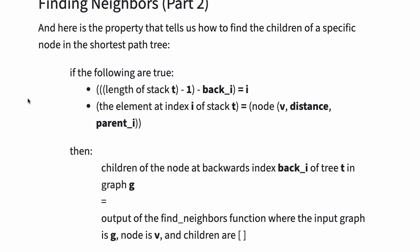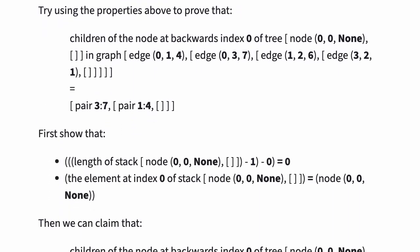Next, here is the property that tells us how to find the children of a specific node in the shortest path tree. If the length of stack t minus 1 minus back(i) is equal to i, and the element at index i of stack t is equal to node(v, distance, parent i), then children of the node at backwards index back(i) of tree t in graph g is equal to the output of the find neighbors function where the input graph is g, node is v, and children are empty. Try using this property to prove that the children of the node at backwards index 0 of tree node(0,0,none) in graph edge(0,1,4), (0,3,7), (1,2,6), and (3,2,1) is equal to the stack pair(3,7) and pair(1,4).